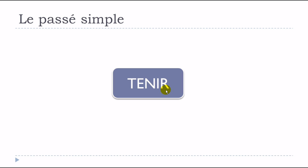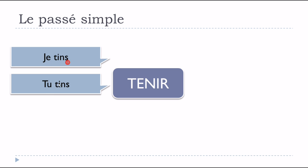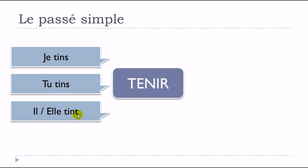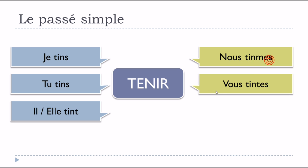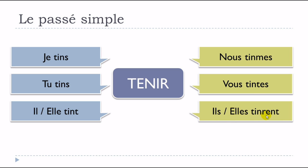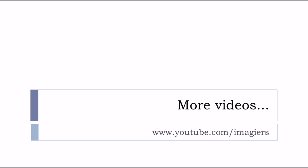And TENIR — exactly the same pattern as VENIR — and all verbs composed with TENIR: je tins, tu tins, il tint, elle tint, nous tînmes, vous tîntes, ils tinrent, elles tinrent. And this is it for le passé simple. I will do a few videos right after covering être, avoir, and a few other important verbs at the passé simple form.